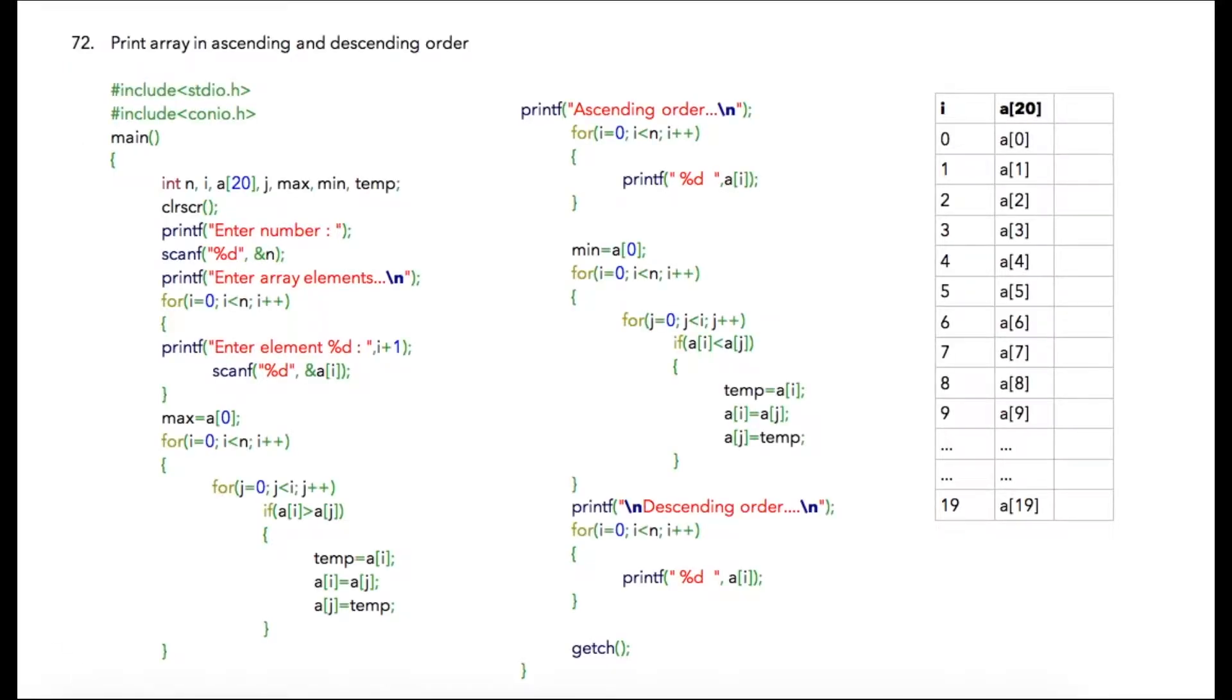In this program we are going to print an array in ascending or descending order. The program has an array of size 20. i and j are looping variables. Max and min are two variables to store maximum and minimum values during the loop. Temp is a third variable to swap two numbers when required. N is the number of elements the user will enter.